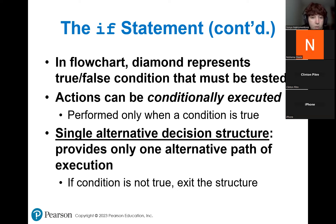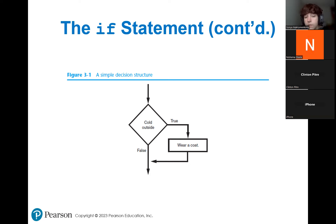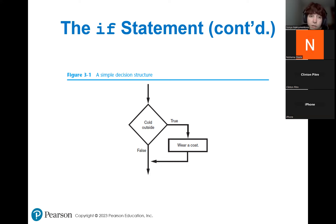This is a simple decision structure with true or false — there are only two ways your program can go. In this example, if the condition is called outside, it evaluates to true and something happens. Then we exit the decision structure. If it's not called outside, your program just continues carrying on with the flow of the code.